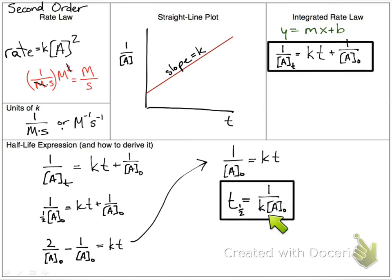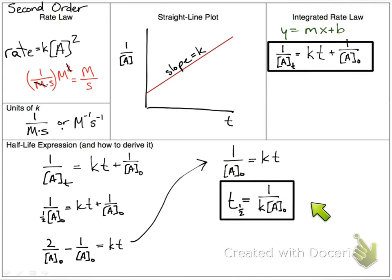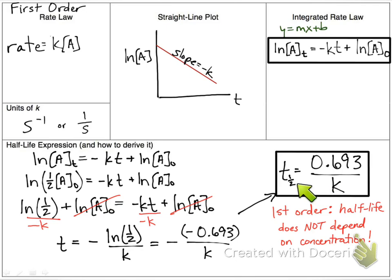Notice that the second-order half-life does depend on initial concentration. So if you're looking at a reaction where the half-life is changing — the time to cut in half the first time is different from the second time — it's not first order; it could be second or zeroth order, since both have half-lives that depend on concentration. You need to know the three integrated rate laws and that the half-life for a first-order reaction does not depend on concentration.